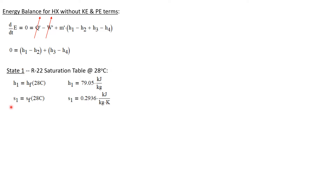Let's start finding these values in the table. We go to the R22 saturation table at 28 degrees C. State one is a sub-cooled liquid, so H1 is simply H sub F at 28 degrees C, which gives H1 equal to 79.05 kilojoules per kilogram. The entropy at state one is just the entropy of a saturated liquid at the same temperature, giving S1 equal to 0.2936 kilojoules per kilogram K.